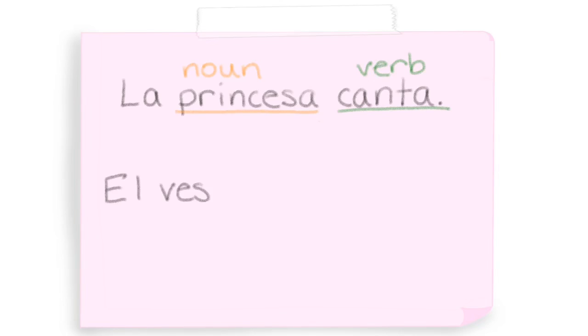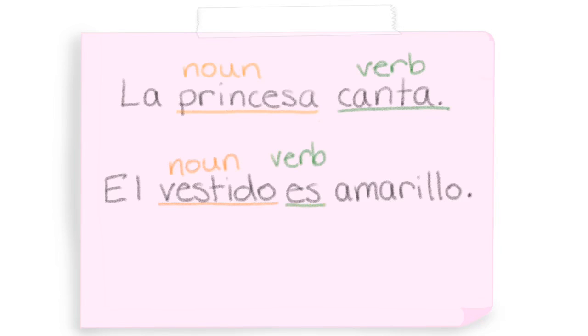El vestido es amarillo. Vestido is the noun, es is the verb, and amarillo is the adjective.